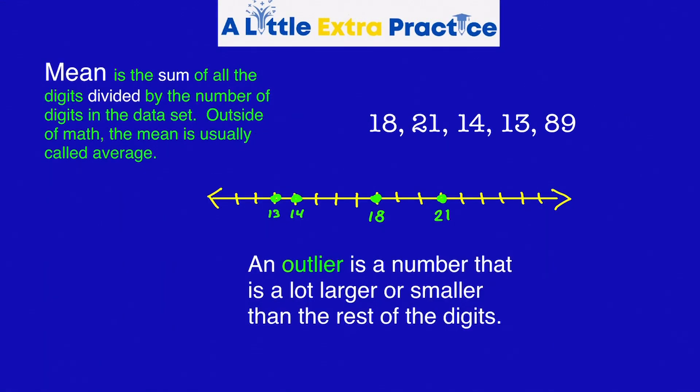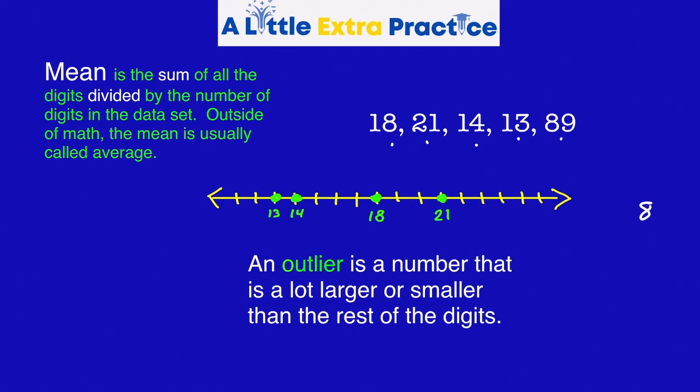Looking back at the original number set: 18, 21, 14, 13, 89. I put these numbers on a number line. 13, 14. They're all pretty close together. This number line would have to be very long to have 89. Be way off the screen.